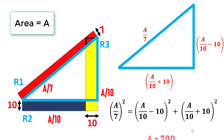After solving this equation we get A equals 700. We had initially assumed the area of the rectangle is A, and since all three rectangles are equal in area, the area of all rectangles in this diagram is 700 square units. You can solve this problem in multiple ways — please do share your approach. The method I followed is one of the easiest ways to solve this problem. That's all for this video. If you found the video useful, please like it.